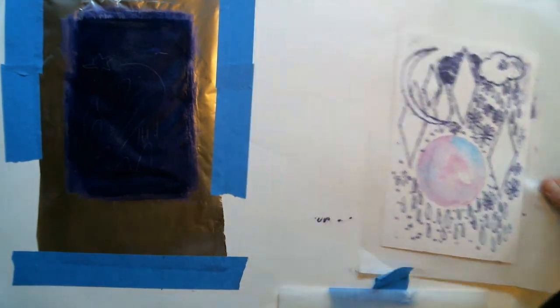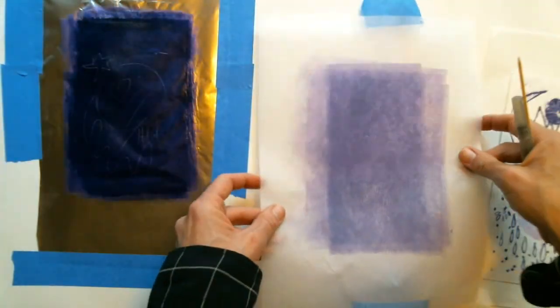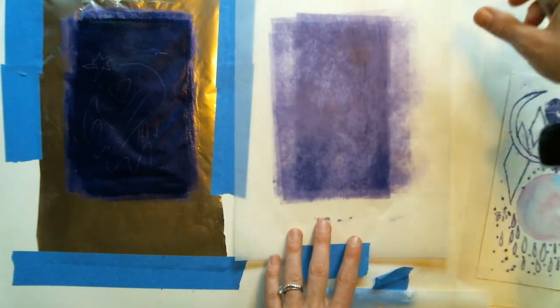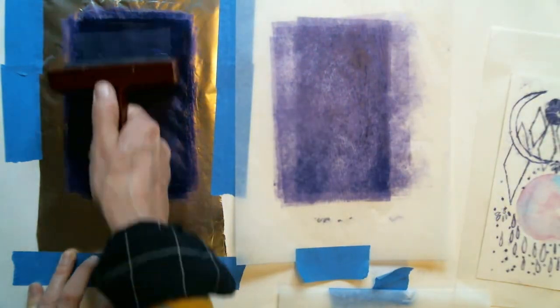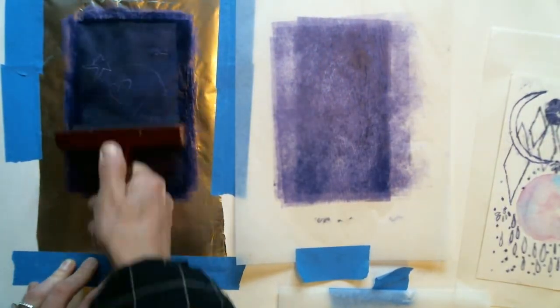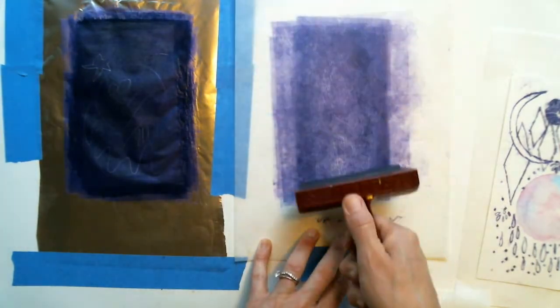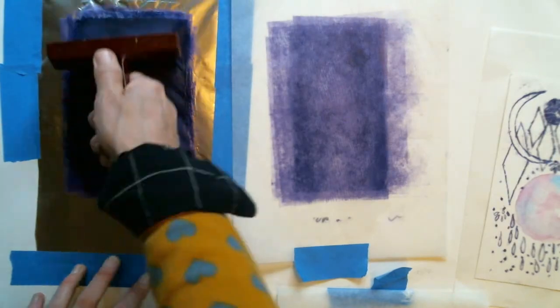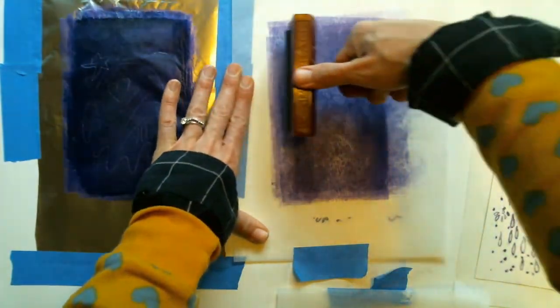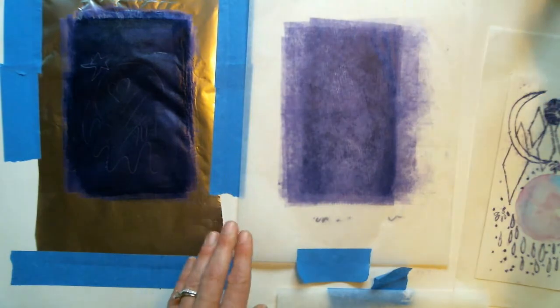To recharge it, you would lay it face up, so now the ink side is up. You would go back to your inking slab, recharge the roller, and then roll back on top of your tracing paper. So you're just reloading it with material.